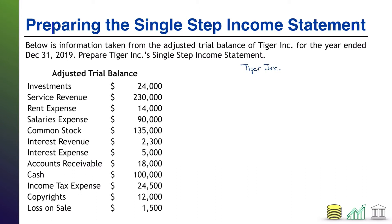I'm going to start off with the header here. Tiger, Inc. — that's the company name. Then you need the financial statement name: Income Statement. And then you have to put the period or point in time covered. Income statements cover a period of time. In this case, it is going to be year ended 12-31-2019. So there's our header.